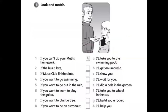Now let's move to the exercises. We have two exercises in page 95 of your workbook. For exercise number one, you have to look and match — look at the picture and these sentences, then match the first set of sentences with the second set. For example: 'If you can do your maths homework, I'll take you to the swimming pool.' All the first sentences start with 'if', so these are the if clauses, and the second sentences all start with 'I will'.